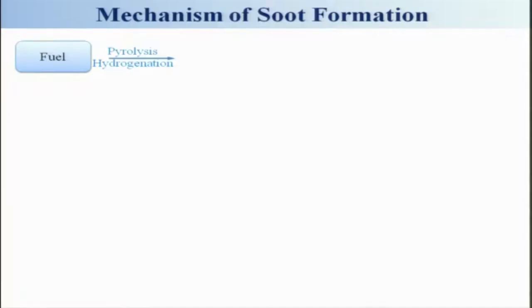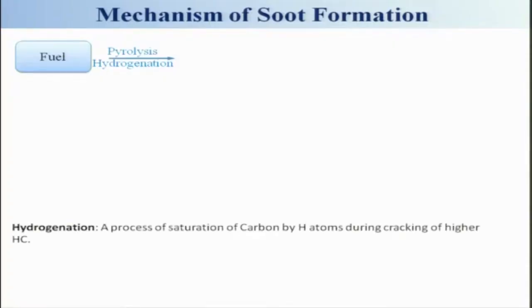If you look at the fuel, it will be subjected to pyrolysis — that means thermal heating, a process in which higher hydrocarbons are converted into lower hydrocarbons. Generally this occurs in the absence of oxidizer. However, in a diffusion flame, there might be some oxidizer leaking nearby the flame surface, but not far away from it. So there will also be some hydrogenation. Hydrogenation is basically a process of saturating the carbon by hydrogen atoms during cracking of higher hydrocarbons.